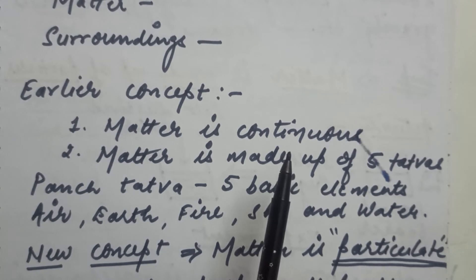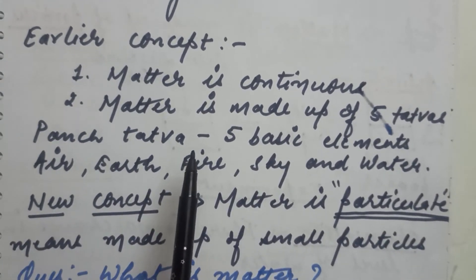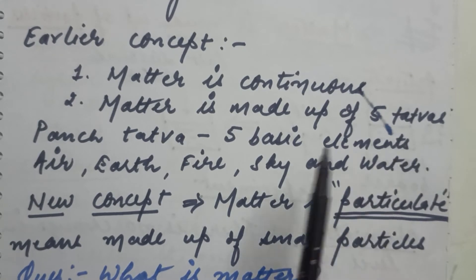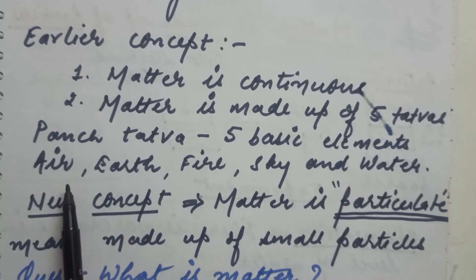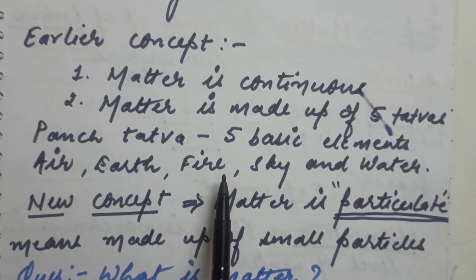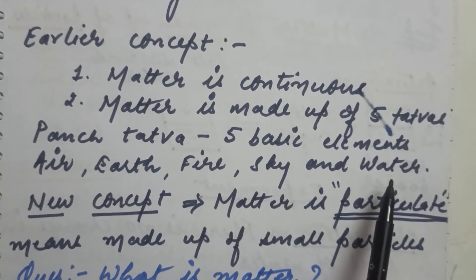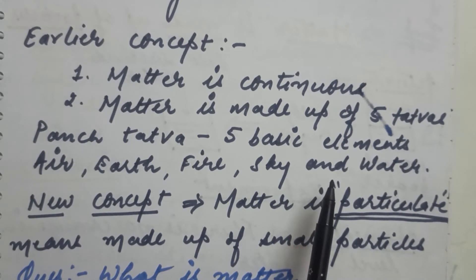Philosophers then proposed that matter is made of five basic elements: air, earth, fire (agni), sky (akash), and water. This was the first concept of matter.